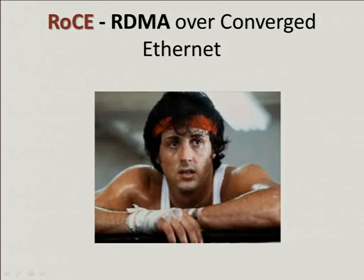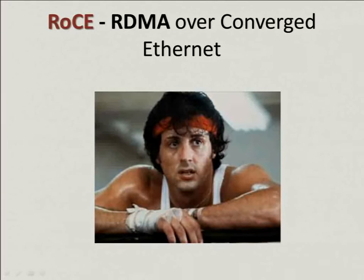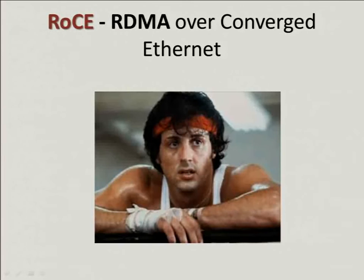Now I know what InfiniBand is and what RDMA is, and I want to use it — but I already have an Ethernet network and deployment, and I don't want to change all of my network just to use RDMA. For that we have RoCE. RoCE is RDMA over converged Ethernet, which means I can use RDMA and InfiniBand's great performance but on Ethernet.